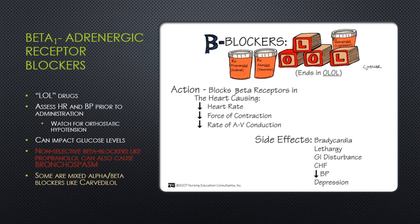It's important to remember that the main way we compensate for a decrease in blood pressure is to increase heart rate, and a patient taking a beta blocker cannot increase their heart rate to compensate for shock. So the normal signs of compensation may not be present. A patient taking a beta blocker who is experiencing anaphylaxis may also not be able to respond to the normal effects of epinephrine, since it is blocking the action of epinephrine at the receptor sites.